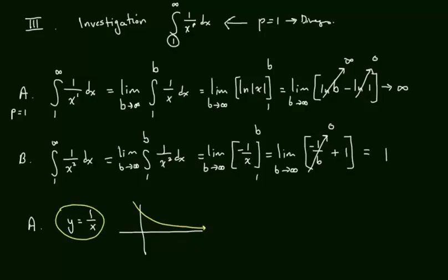y equals 1 over x squared, let's use a different color for that one. That one here is going to look similar and come down like that. So both of these approach an asymptote, y equals 0.